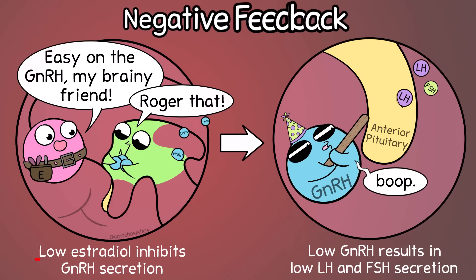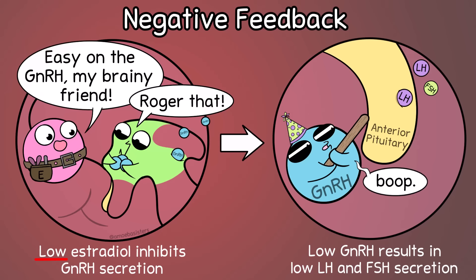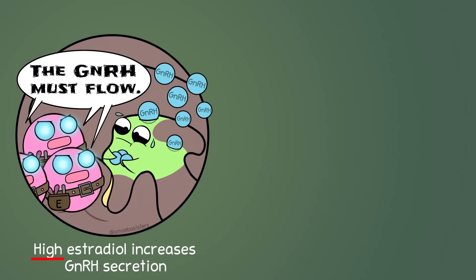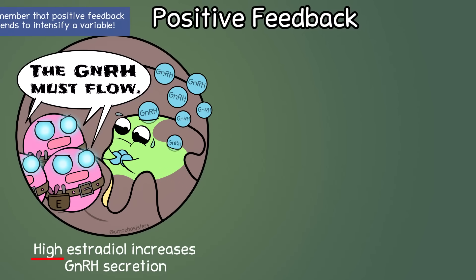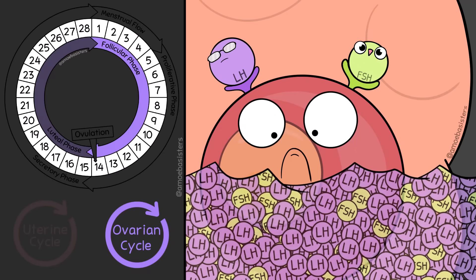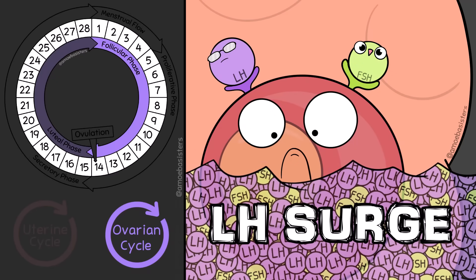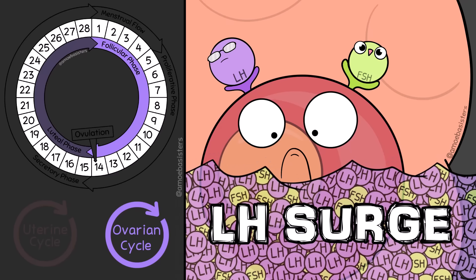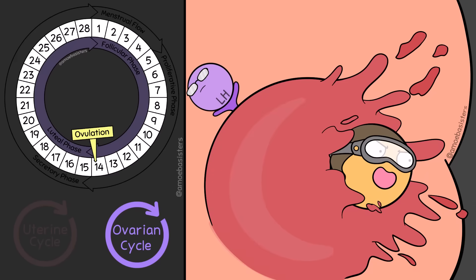Now it gets tricky here. While low levels of estradiol inhibit the hypothalamus and anterior pituitary — ultimately leading to low secretion of GnRH, FSH, and LH — high levels of estradiol actually stimulate these glands, resulting in more GnRH secretion through positive feedback. So when that estradiol reaches a certain high level, GnRH secretion will go up, and the anterior pituitary will start cranking out more FSH and LH. LH starts to really increase — this rapid increase is known as an LH surge. The LH surge will trigger ovulation to happen roughly a day or so later.